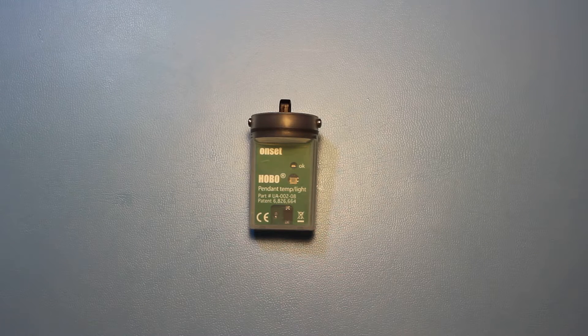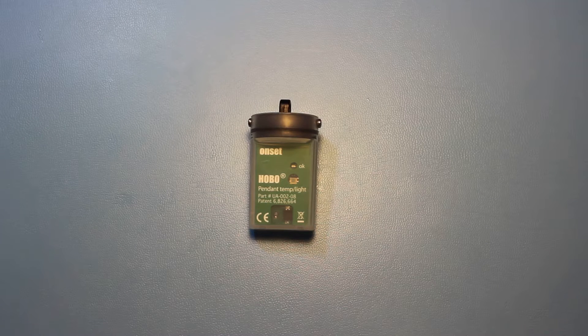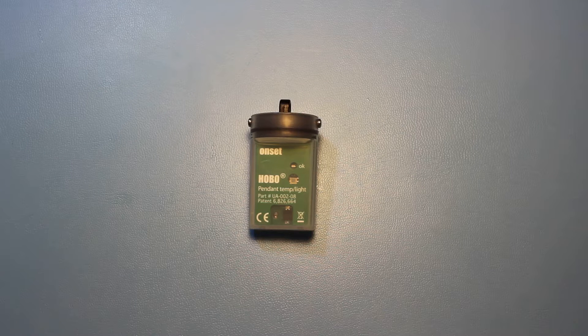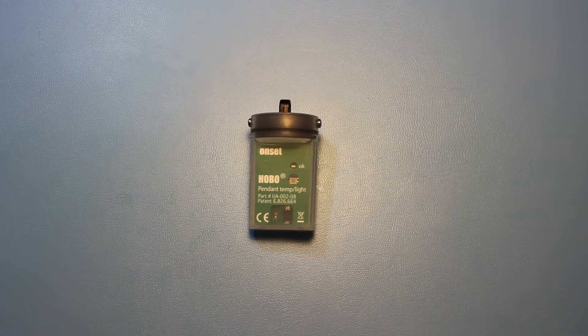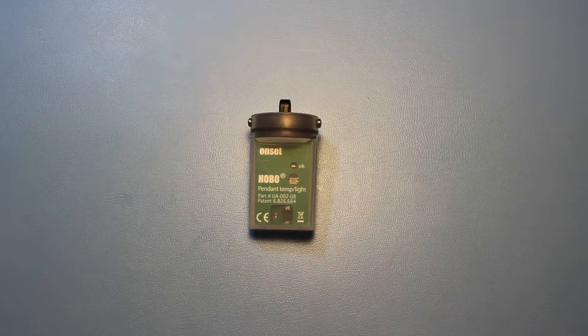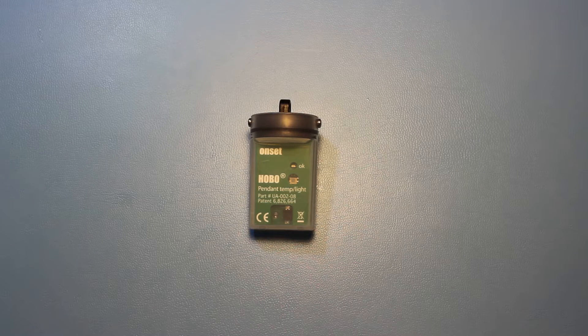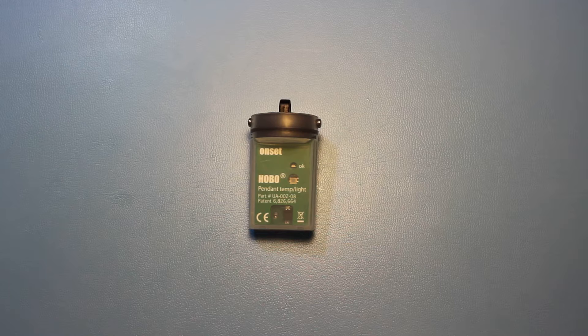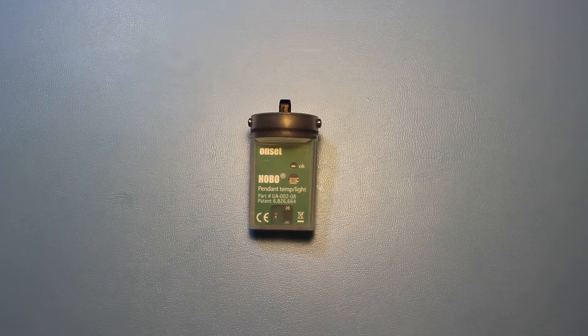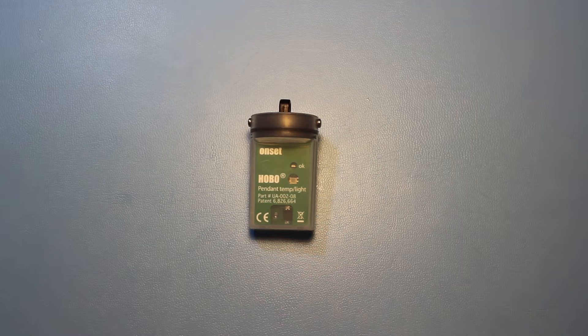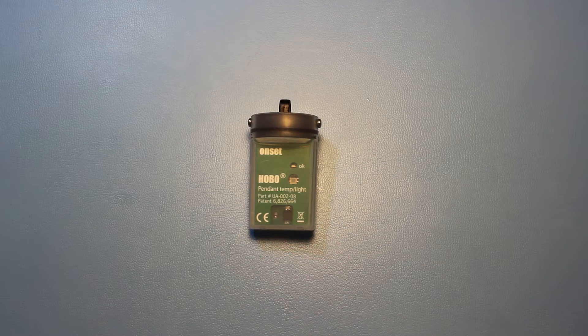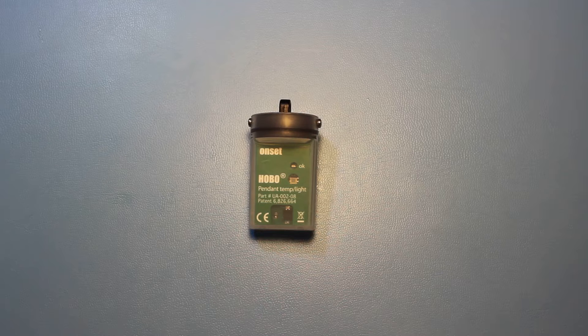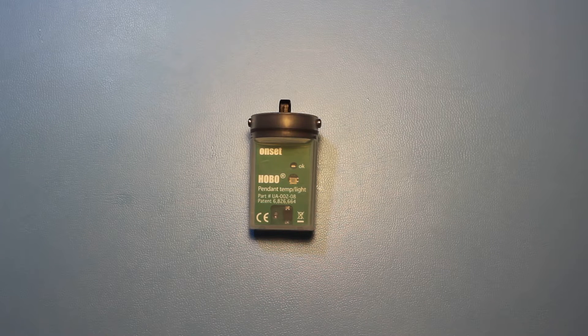This video will show you how to rework and lubricate the O-ring in the Hobo Pendant Data Logger. Here we have a Hobo Pendant Temp Light Logger. The procedure will also work with the Hobo Pendant Temp Logger, the Hobo Pendant G Logger, as well as the Hobo Pendant Event Logger. The Event Logger, just be aware that the end cap has a cable going into it, but it uses the same O-ring.